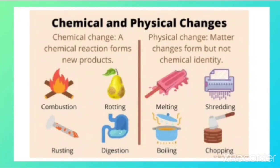To differentiate between physical and chemical changes: a chemical change, or chemical reaction, forms a new product. But in a physical change, the matter changes form but not its chemical identity — that means no new substance is formed. These are the key differences between physical and chemical changes.